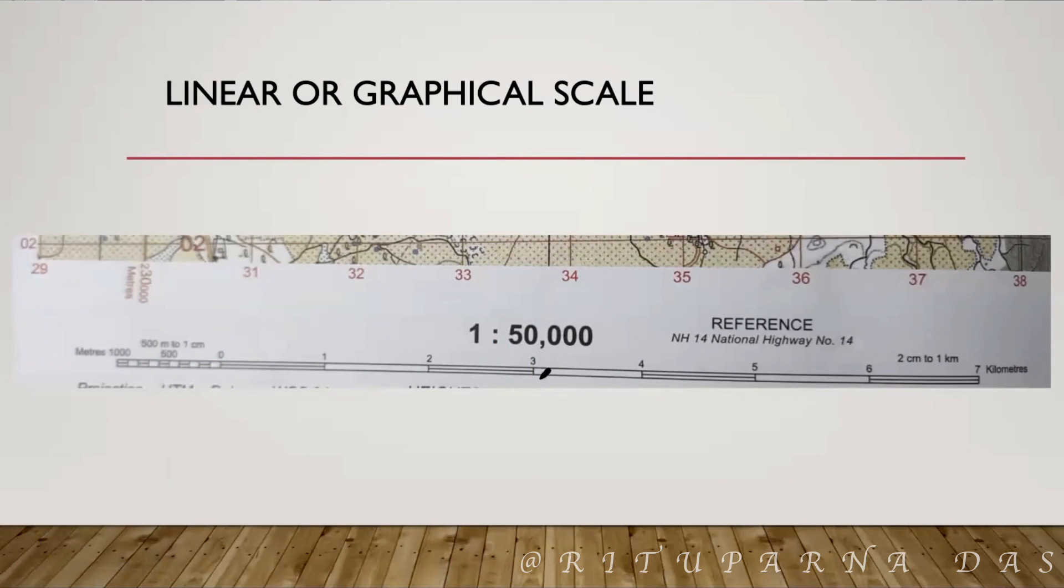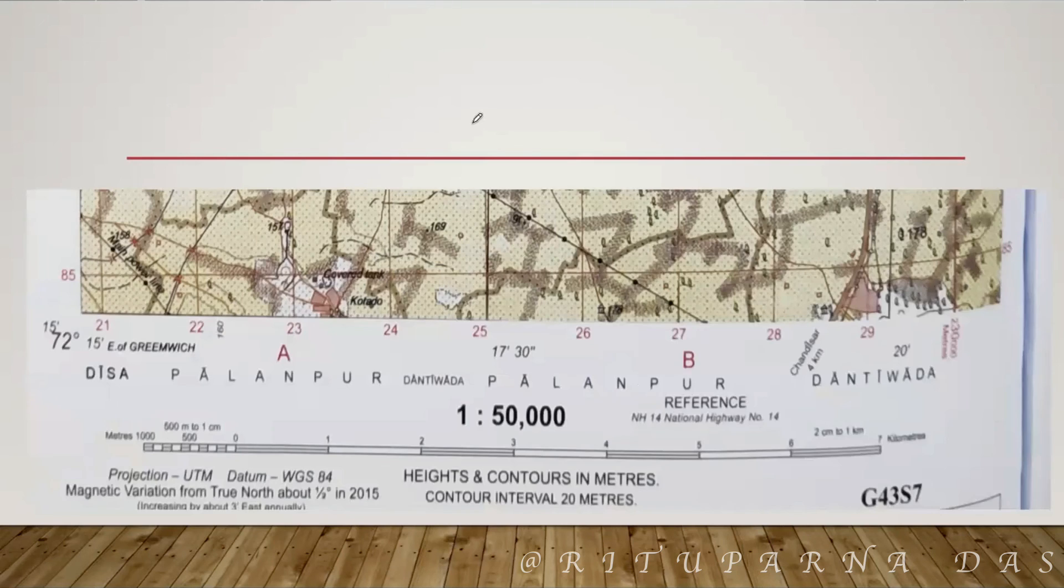Now, in case, if I ask you to find the distance between these two points, it will be not at all difficult for you because you are already aware of the secondary divisions. With the help of the secondary divisions, you can tell it is 200 meter or 300 meter, whatever it is. That is the use of the secondary divisions.